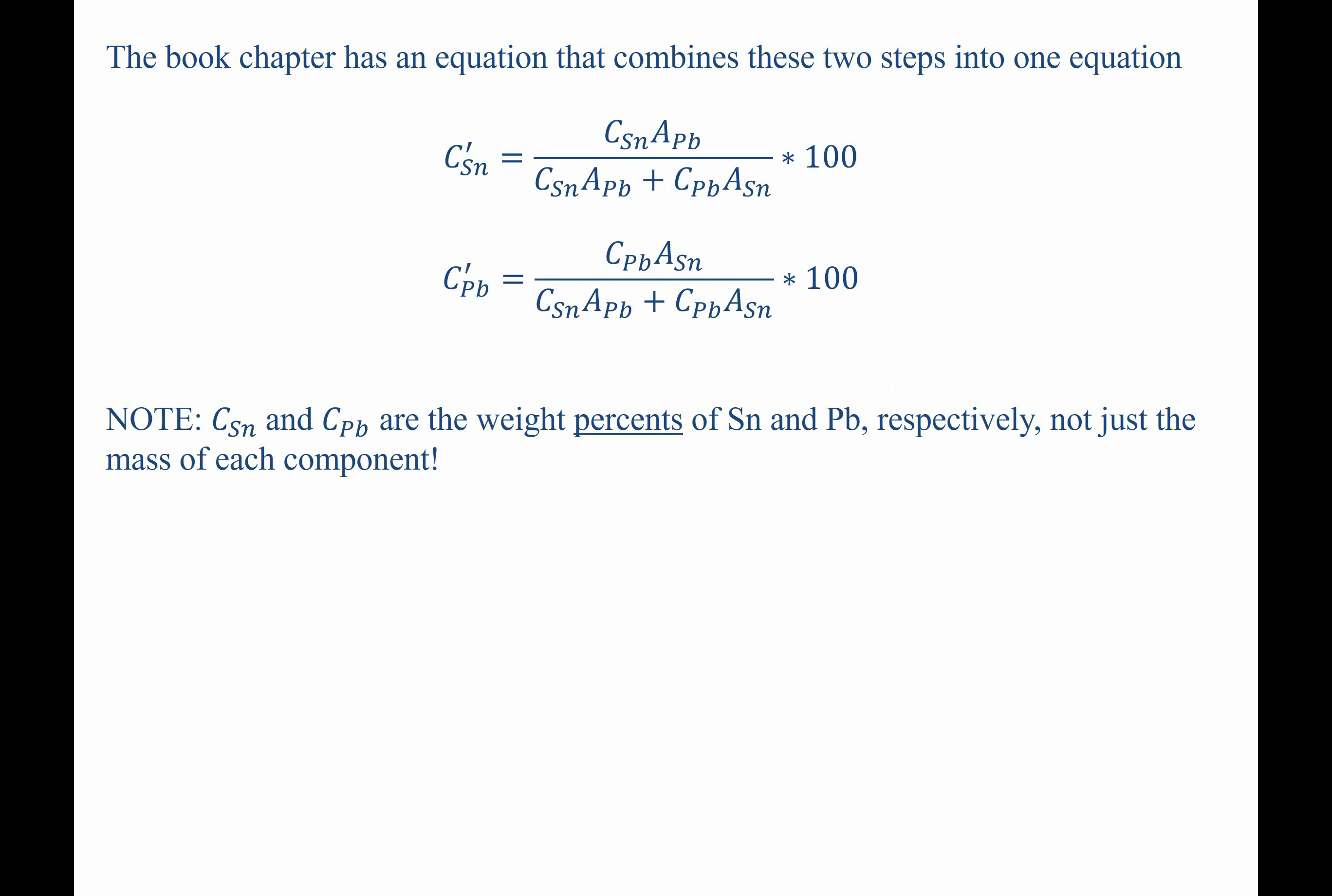Now the book chapter has an equation that combines these same two steps into one equation. The c prime sn, that's the atomic percent of tin, can be calculated if you know c sub sn, that's the weight percent of tin, multiplied by the atomic weight of lead, all divided by c sub sn times the atomic mass of lead plus c sub pb, that's the weight fraction of lead, times the atomic mass of tin.